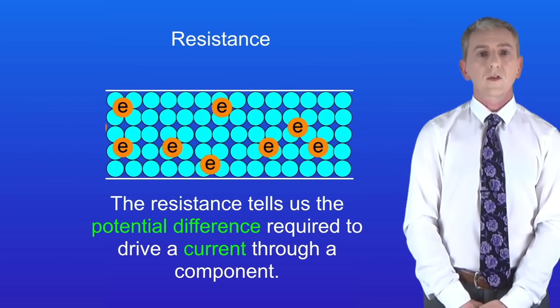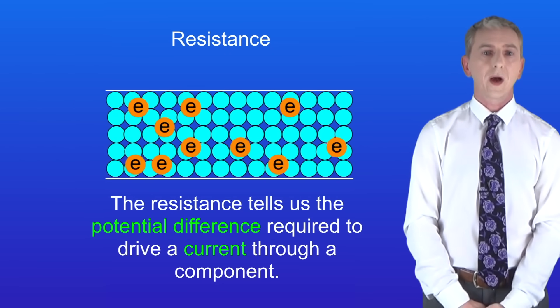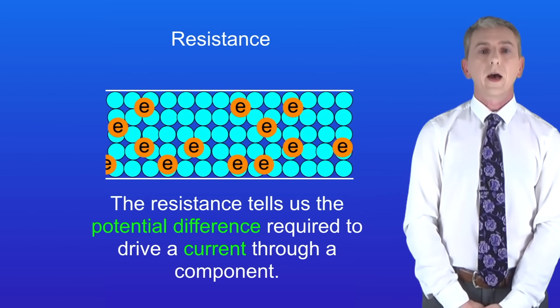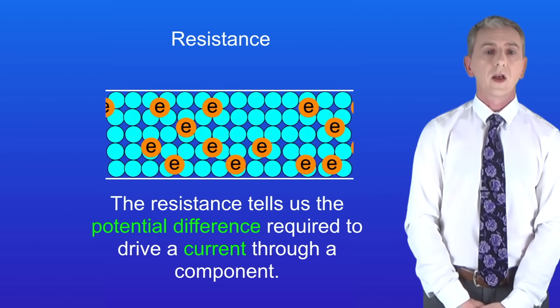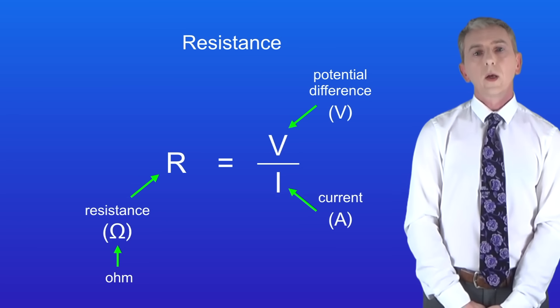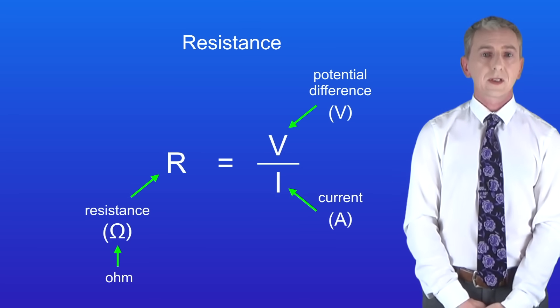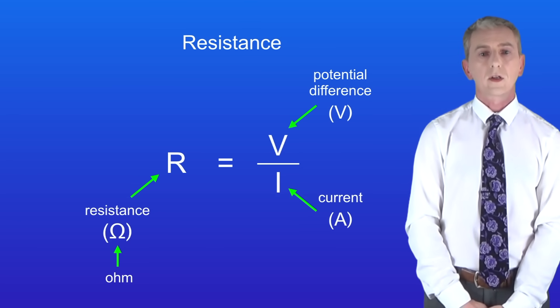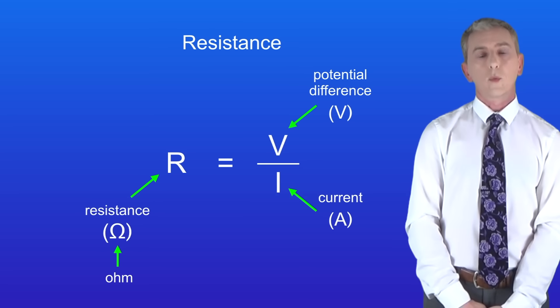The resistance simply tells us the potential difference required to drive a current through a component. And remember that the higher the resistance, the more energy is transferred as the current moves. We calculate resistance by dividing the potential difference by the current, and remember that the unit of resistance is the ohm.